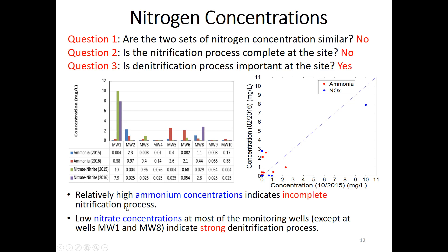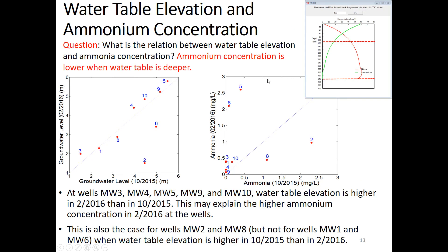Nitrate concentration is relatively low — this could be due to incomplete nitrification, meaning nitrate entering the water table is not high, or it could indicate strong denitrification. The second question is whether denitrification is complete — no, because we have relatively high ammonium concentration. Is denitrification important or strong? Yes.